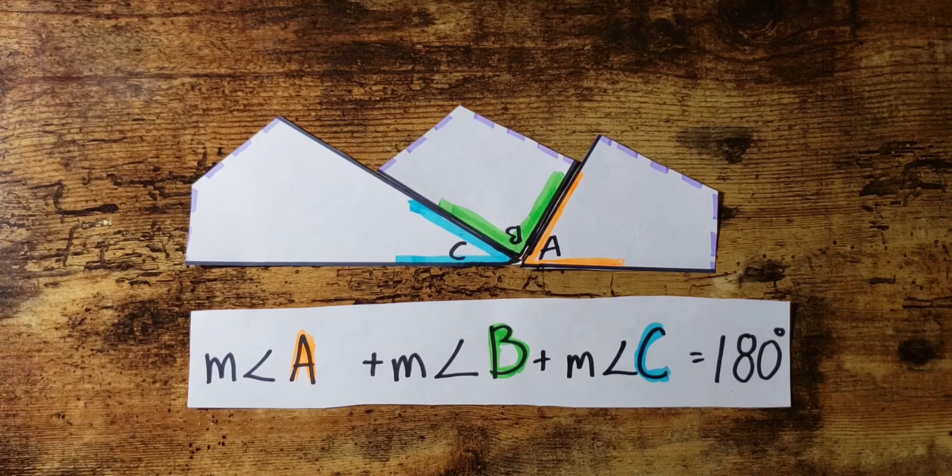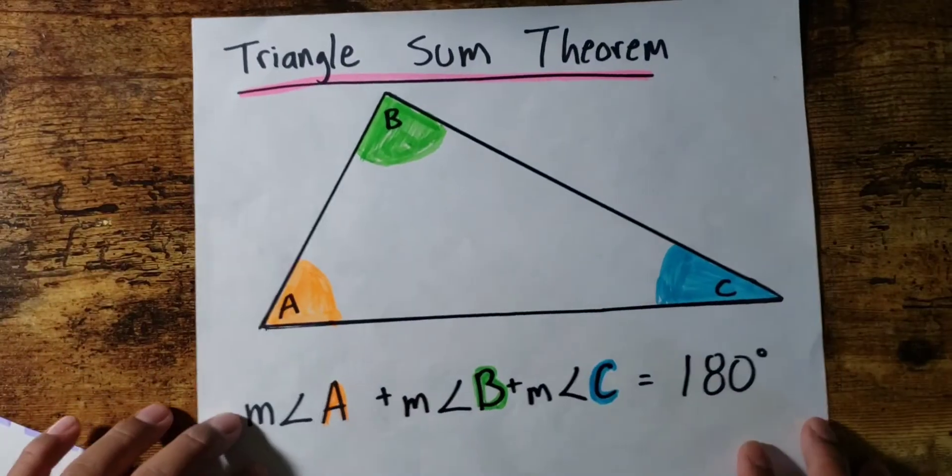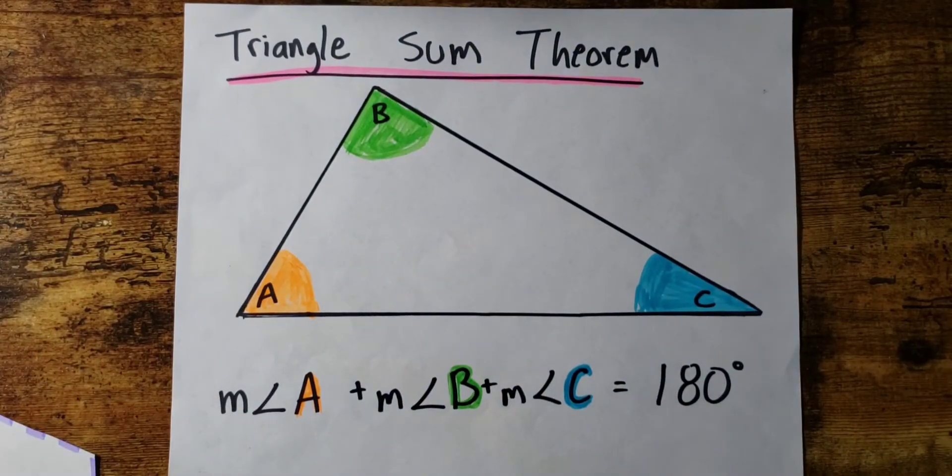If you add up the measurement of all the interior angles, you get 180 degrees. Every time, no matter what type of triangle you're working with—isosceles, equilateral, scalene triangle, right triangle—they all add up to 180 degrees.